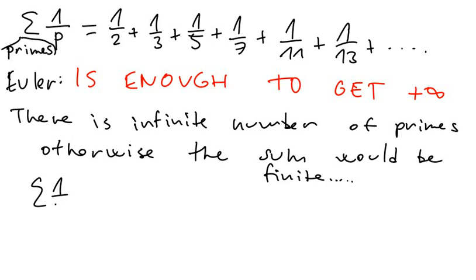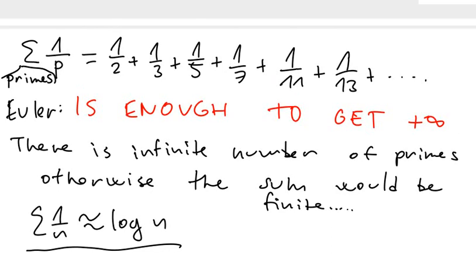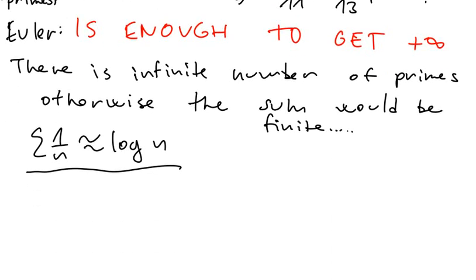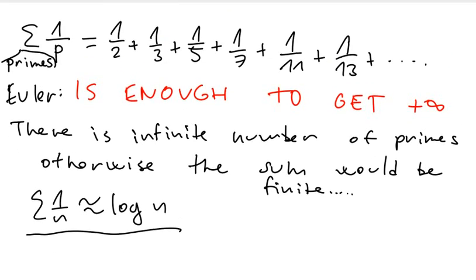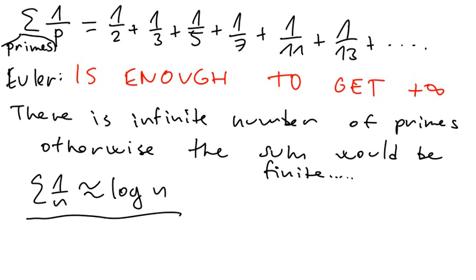So how to do it? We already know that 1 over n is roughly something like logarithm. And so we are going to use this knowledge to work with 1 over p. It doesn't sound very useful right now, so let me work on it a little more.